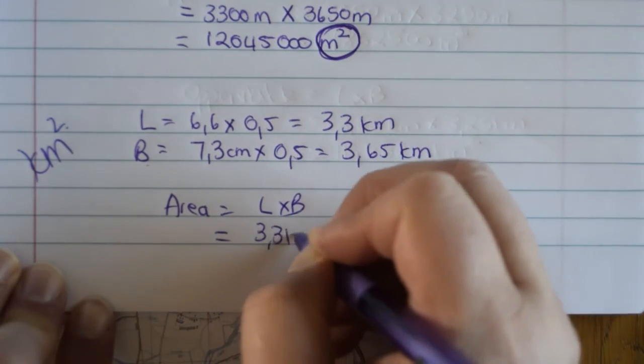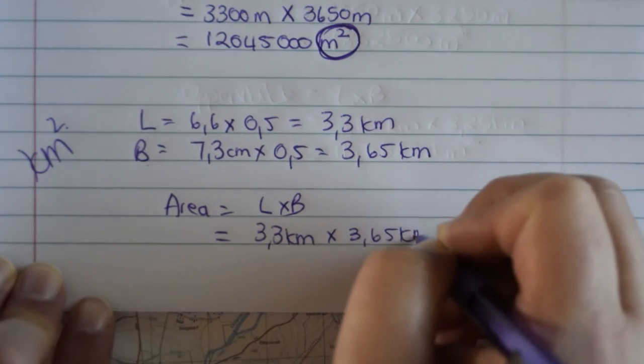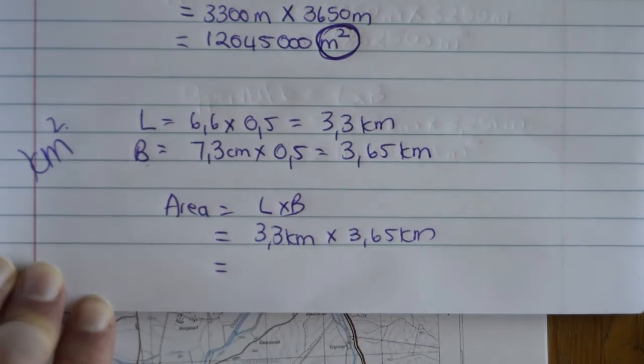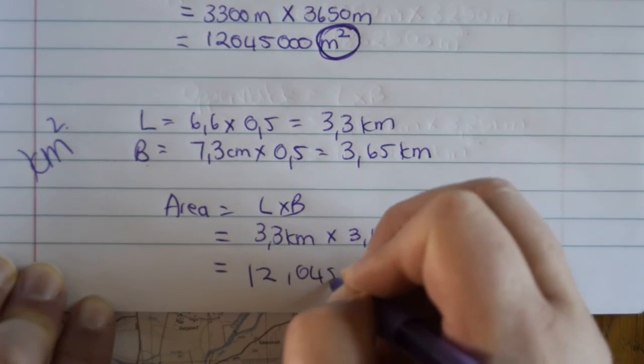which is 3.3 kilometers multiplied by 3.65 kilometers. And that will give you the answer of 12.045 kilometers.